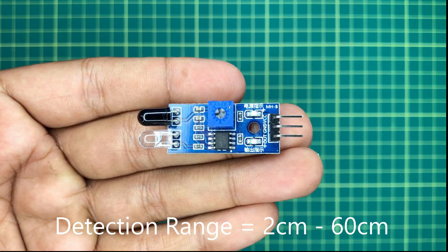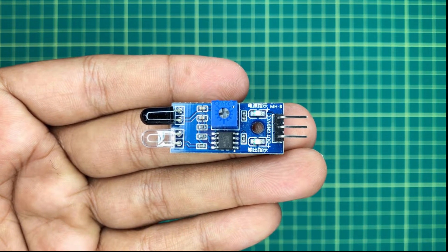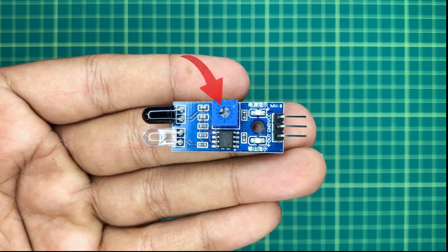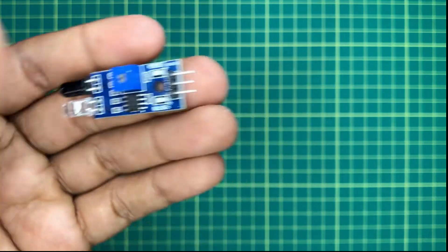It can detect objects within 2 to 60 cm. We can adjust the sensitivity of this sensor by rotating this potentiometer. Let's connect this sensor with the Arduino board.